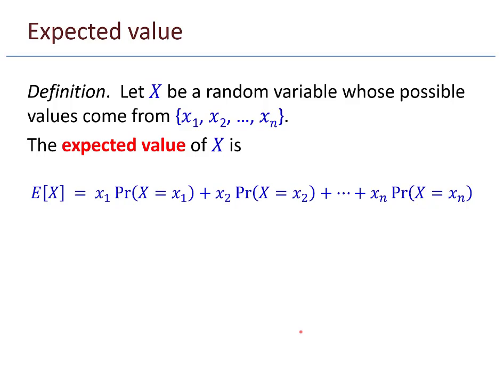Here's our official definition. Let X be a random variable whose possible values are x₁, x₂, up through xₙ. Then the expected value of X is x₁·Pr(X=x₁) plus x₂·Pr(X=x₂), and so on all the way to xₙ·Pr(X=xₙ).